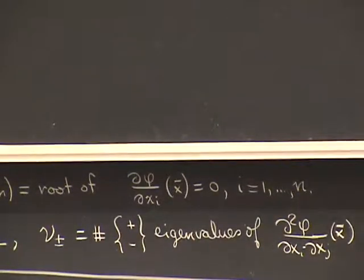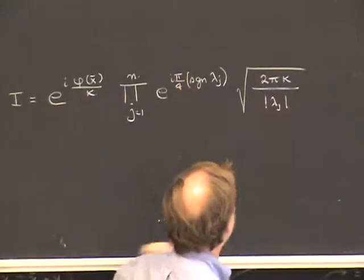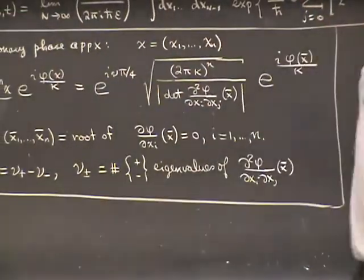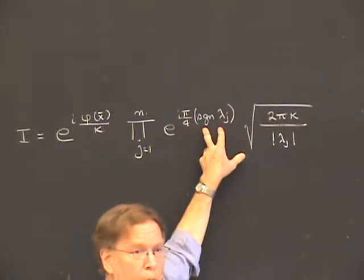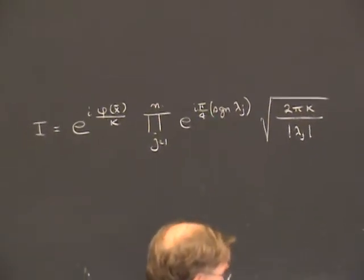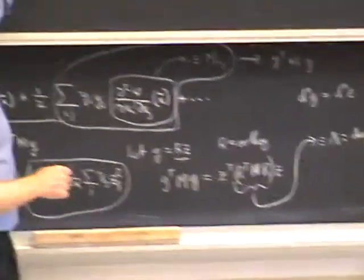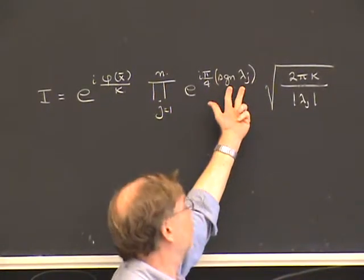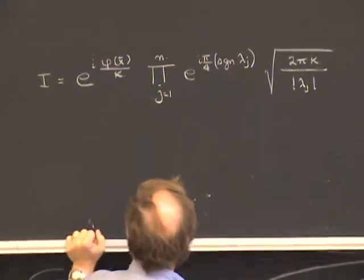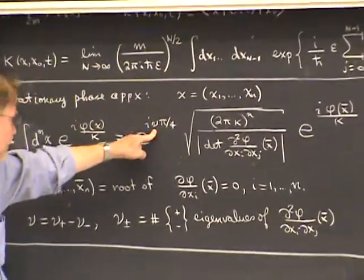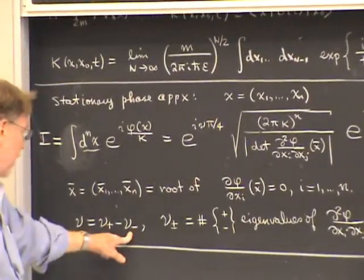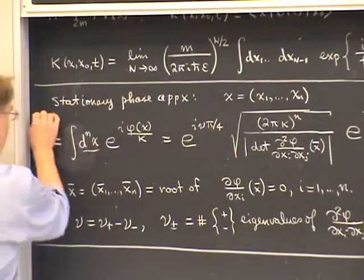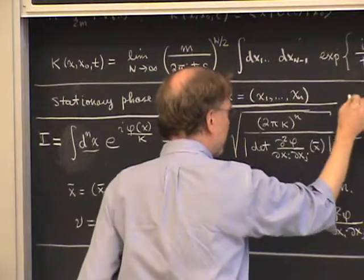The product of the 2 pi kappa factors, since there are n of them, gives (2 pi kappa)^n, explaining the factor under the square root. The product of the signs of the eigenvalues times e^{i pi/4} equals e^{i pi/4 times (number of positive minus number of negative eigenvalues)}. This is e^{i nu pi/4}, where nu is defined as nu_plus minus nu_minus — the number of positive minus negative eigenvalues of the second derivative matrix. That's the derivation of the stationary phase approximation for multidimensional integrals.